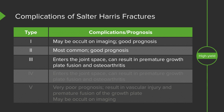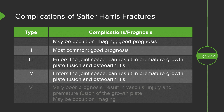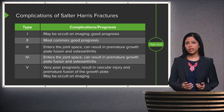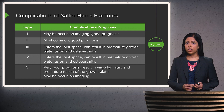A Salter-Harris III can enter into the joint space and can result in premature growth plate fusion and osteoarthritis, so this one is important to recognize as the prognosis is not as good. A Salter-Harris IV also enters the joint space and can result in premature growth plate fusion and osteoarthritis, similar to a type III. The Salter-Harris V fractures have a very poor prognosis because they result in vascular injury and premature fusion of the growth plate. In addition, these can actually be occult on imaging.